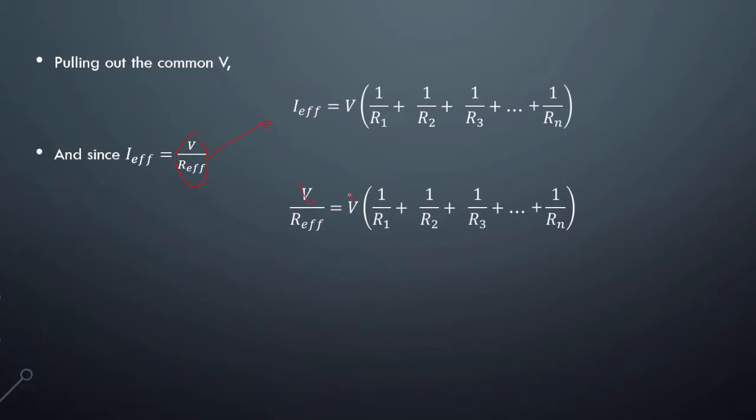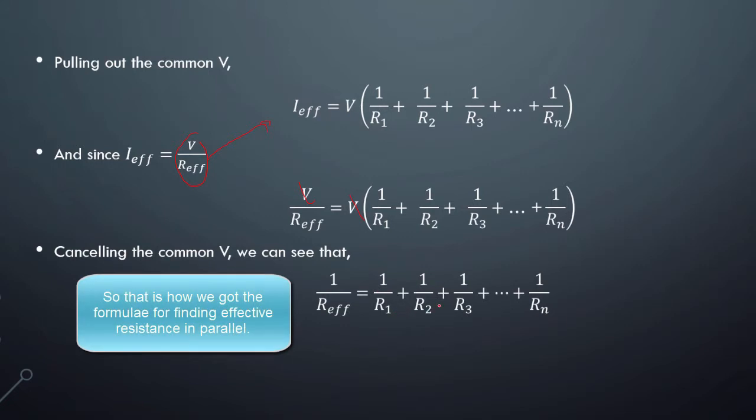And what you can do is just cancel this common term V out. We can see that you have the formula 1 over R effective equals 1 over R1 plus 1 over R2 plus 1 over R3 plus all the way to Rn.